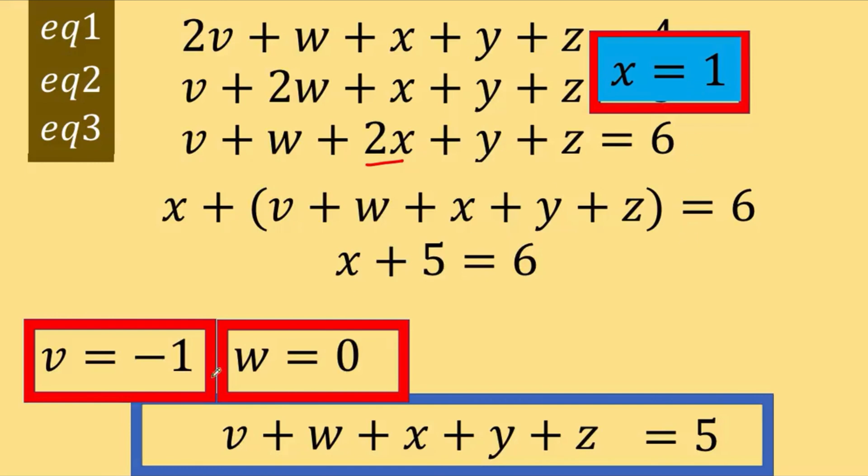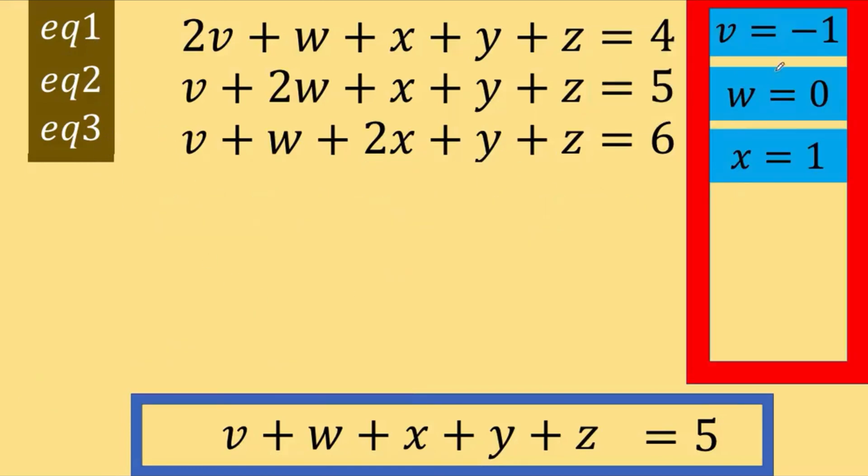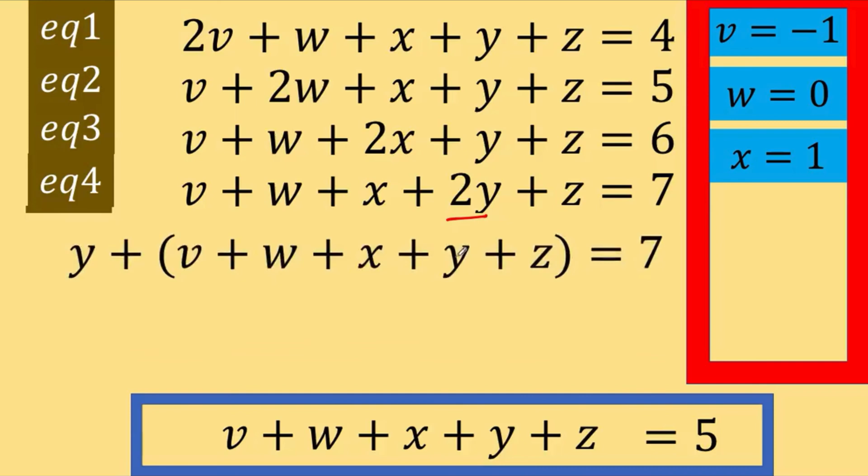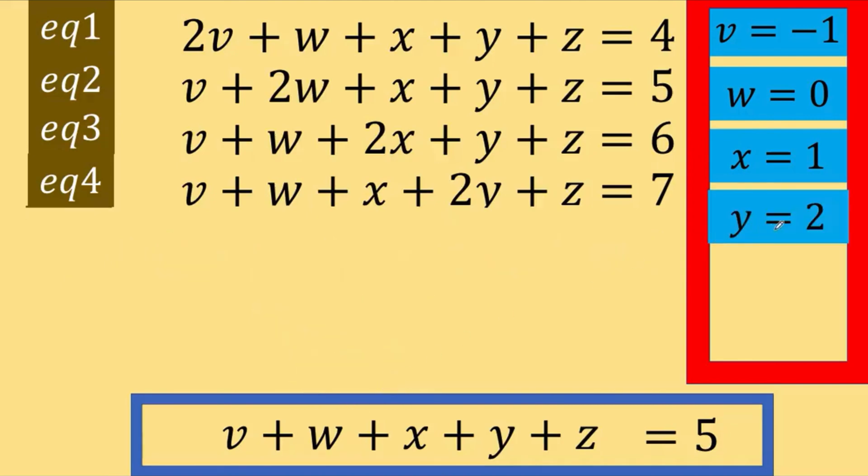So far, we now have three results here by using equations 1, 2, and 3. Now, we need more space. So, let's put these values here at the right. Let's visit equation number 4. This is our equation number 4. And we split again this 2y as y plus y to arrive at this. And this sum inside the parentheses is equal to 5. So, we have y plus 5 equals 7, which gives us y is equal to 2. So, y is equal to 2.